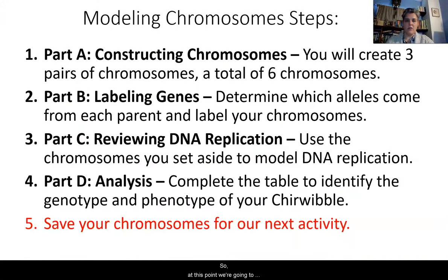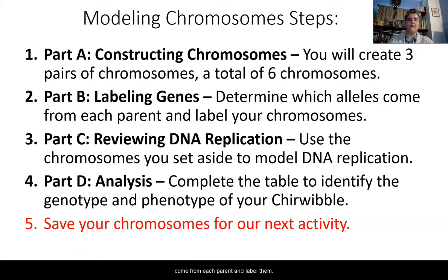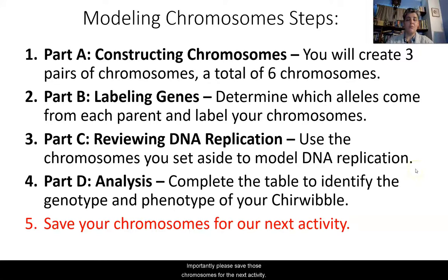So at this point we're going to look at the steps of modeling our chromosomes. Part A is the actual construction of the chromosomes — create those three pairs of chromosomes for a total of six. Part B, you're going to label the genes on those chromosomes, determining which alleles come from each parent. Part C is reviewing DNA replication — use those chromosomes you set aside to model DNA replication. And then Part D is the analysis — complete the table to identify the genotype and phenotype of your particular cherwibble. Importantly, please save those chromosomes for the next activity.